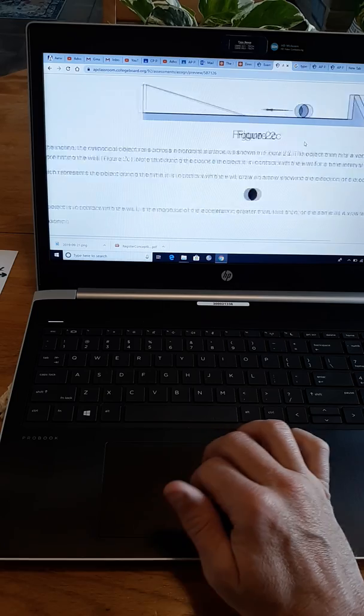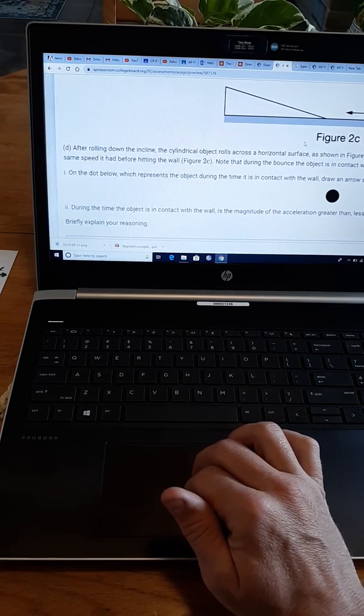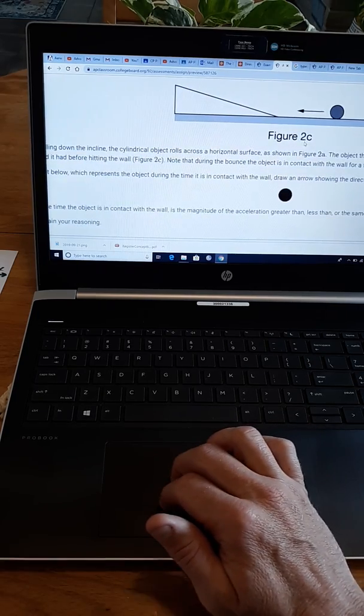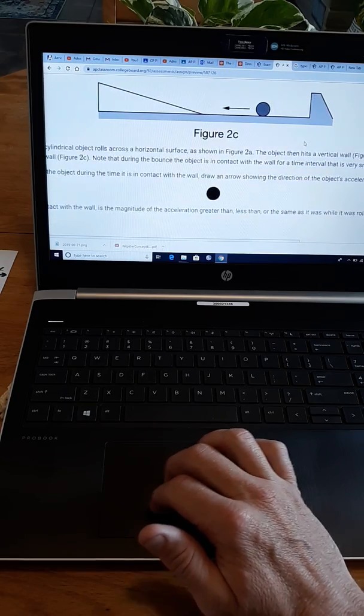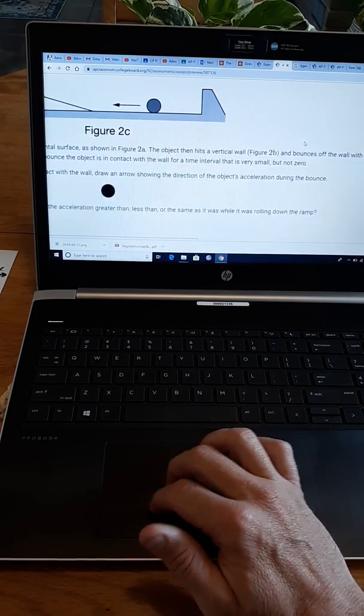And part D says, well D1 that is, says on the dot below, which represents the object during the time it is in contact with the wall, draw an arrow showing the direction of the object's acceleration during that bounce.